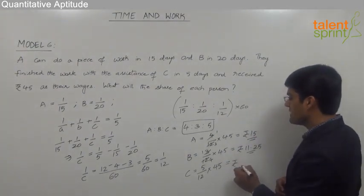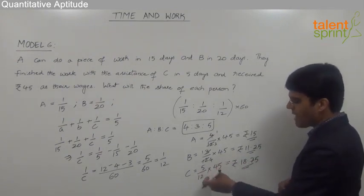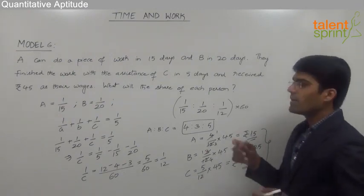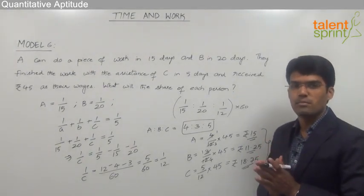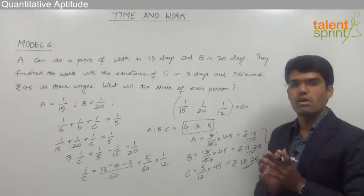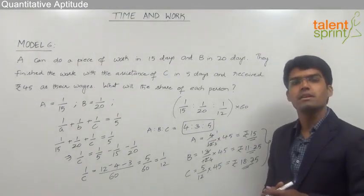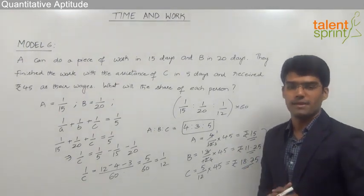So we can say the amount with C should be 18.75 rupees. So these are the individual shares of the 3 persons among the total amount of 45 rupees. So friends, remember only one point that the amount or rupees always should be divided in this case based on the ratio of their capacities, or ratio of the work done by each person in one day.